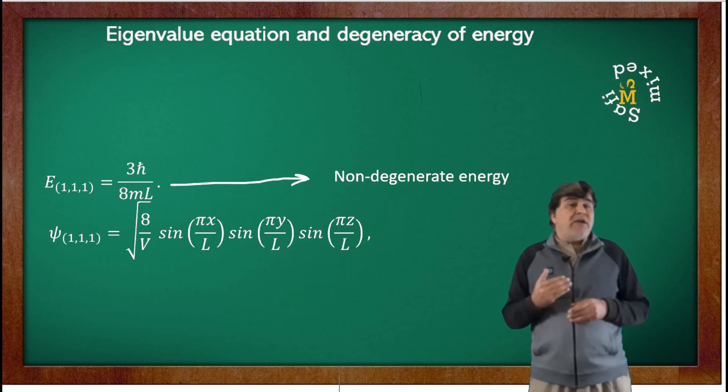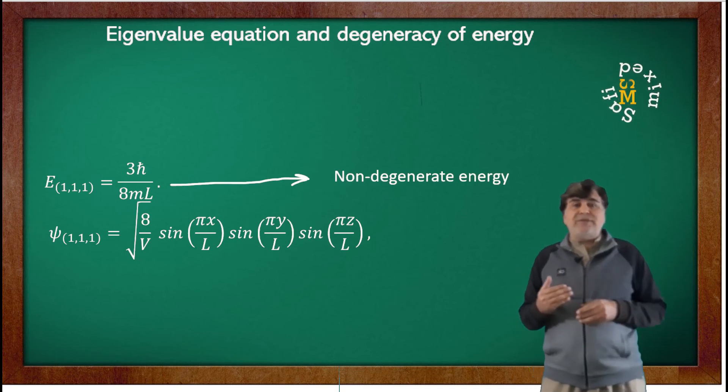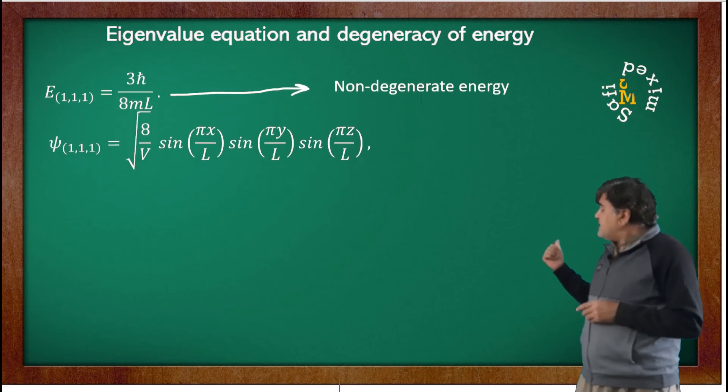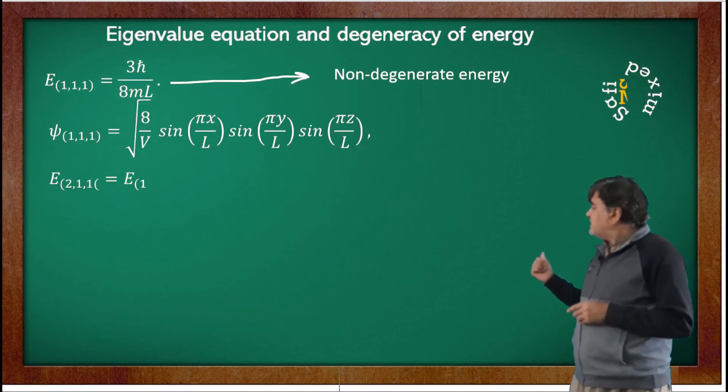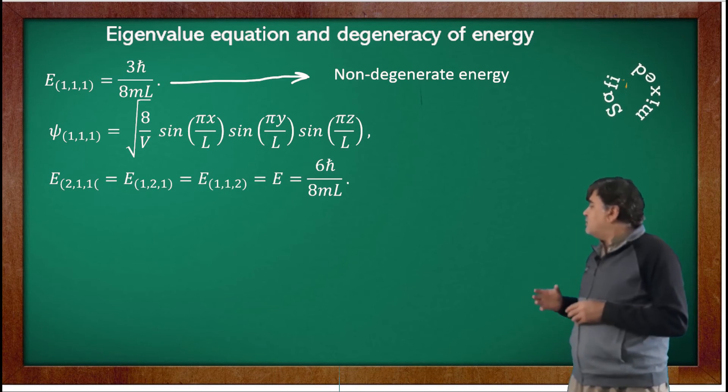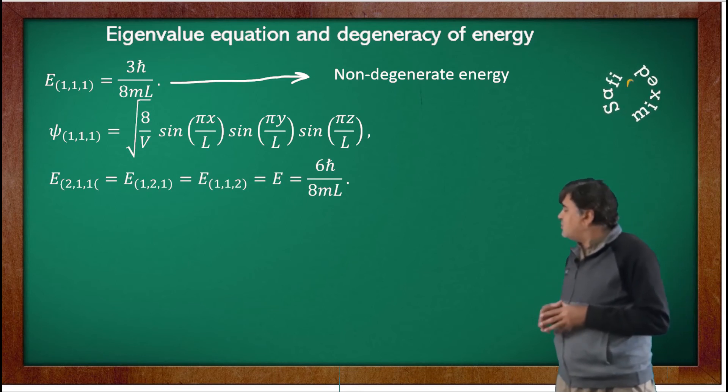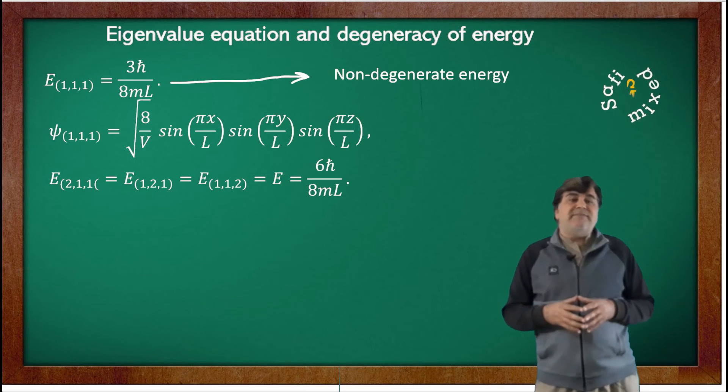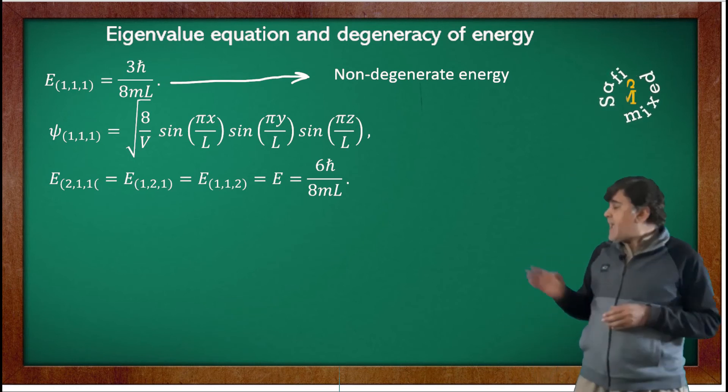On the other hand, one can easily show by substituting values that E_{2,1,1} = E_{1,2,1} = E_{1,1,2}, and all of them equal 6ℏ²/(8mL).